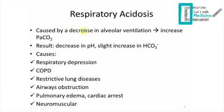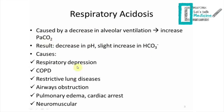Respiratory acidosis is caused by a decrease in alveolar ventilation, leading to an increase in CO2. Any pathology that increases CO2 in your body will result in a decrease in pH and a slight increase in bicarbonate — but not significant. Causes include respiratory depression, COPD, restrictive lung diseases, and airway obstruction — anything that blocks the exchange of oxygen and carbon dioxide through ventilation.